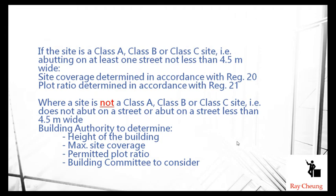Class C is three specific streets at a corner site with more than 60% of the boundary abutting the street. Sometimes if the site is not classified as A, B, or C, the building department will use existing properties to determine the maximum plot ratio and site coverage. You can compare the existing use and make sure it is more or less the same as the one you decide.